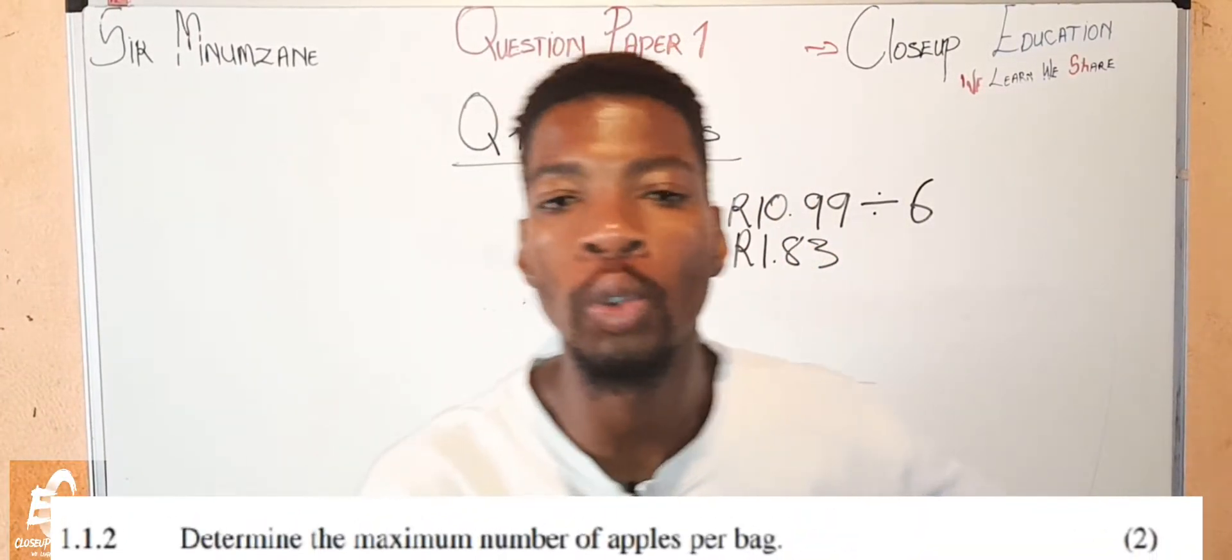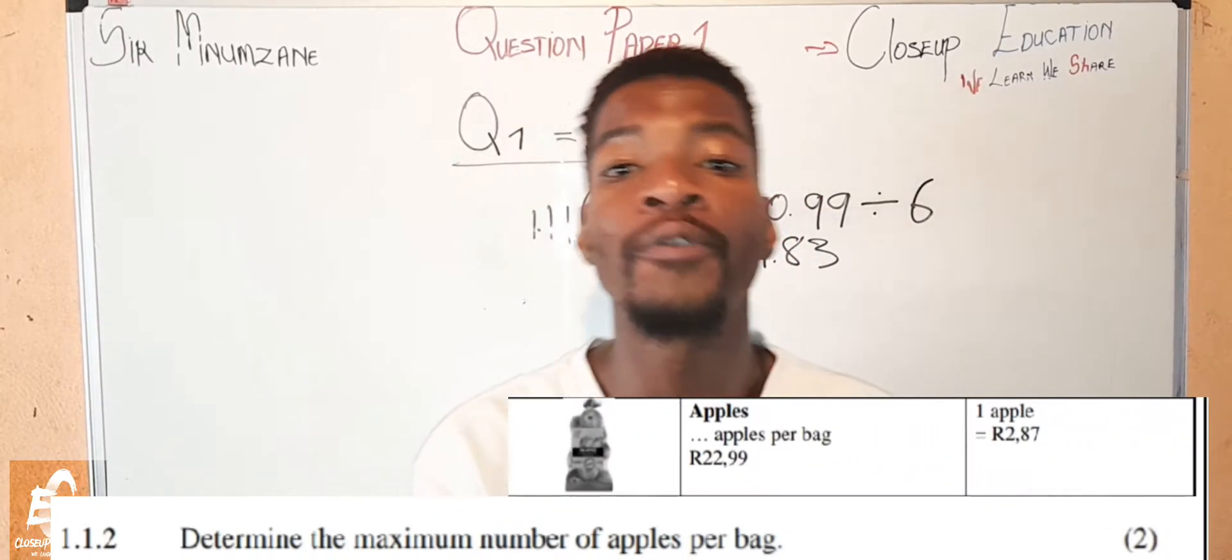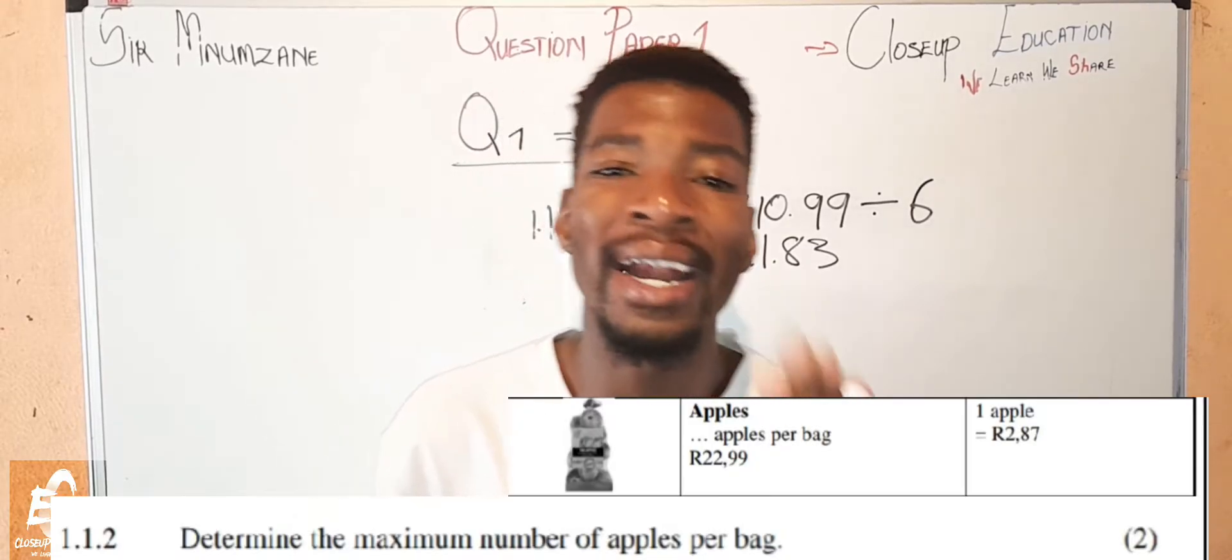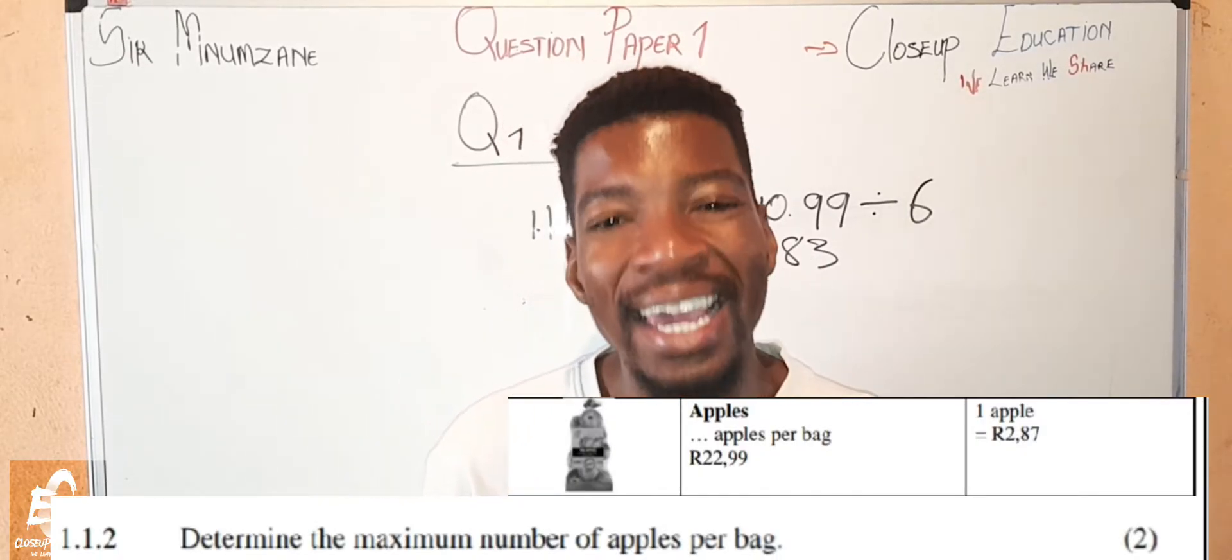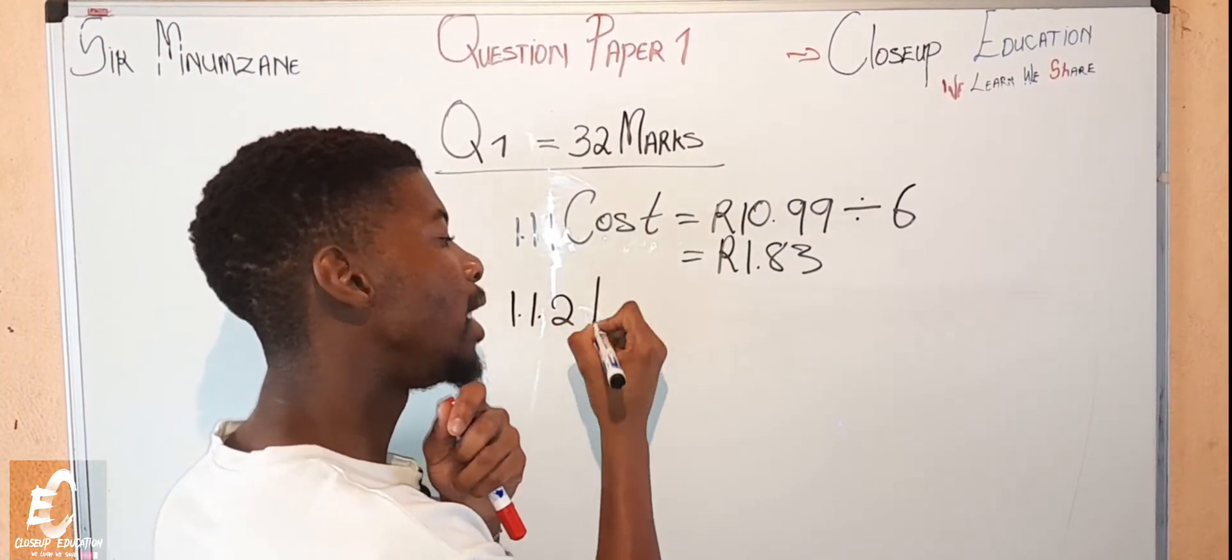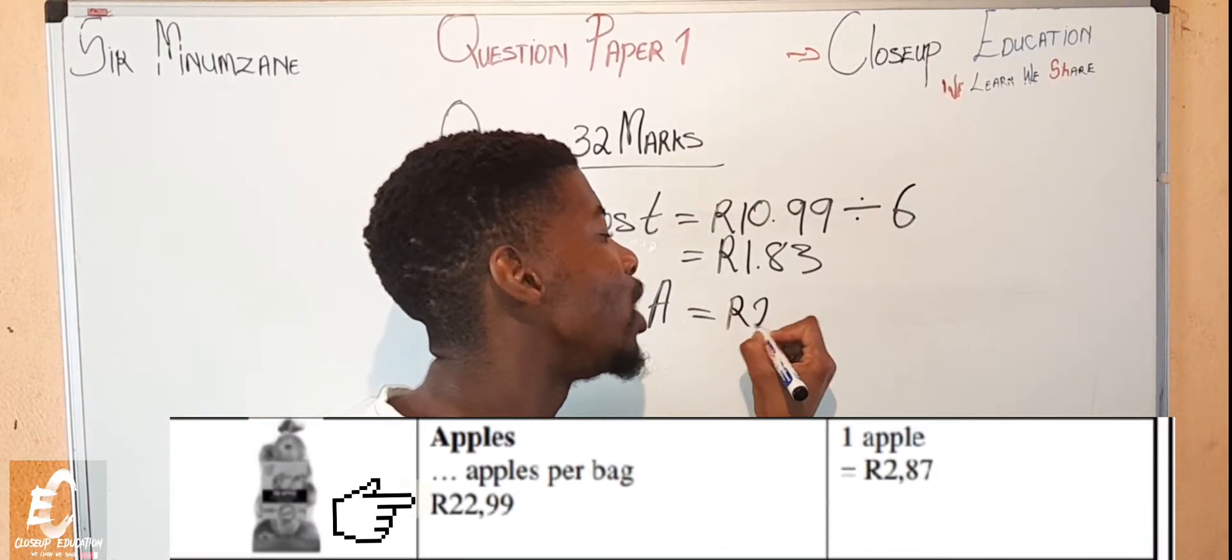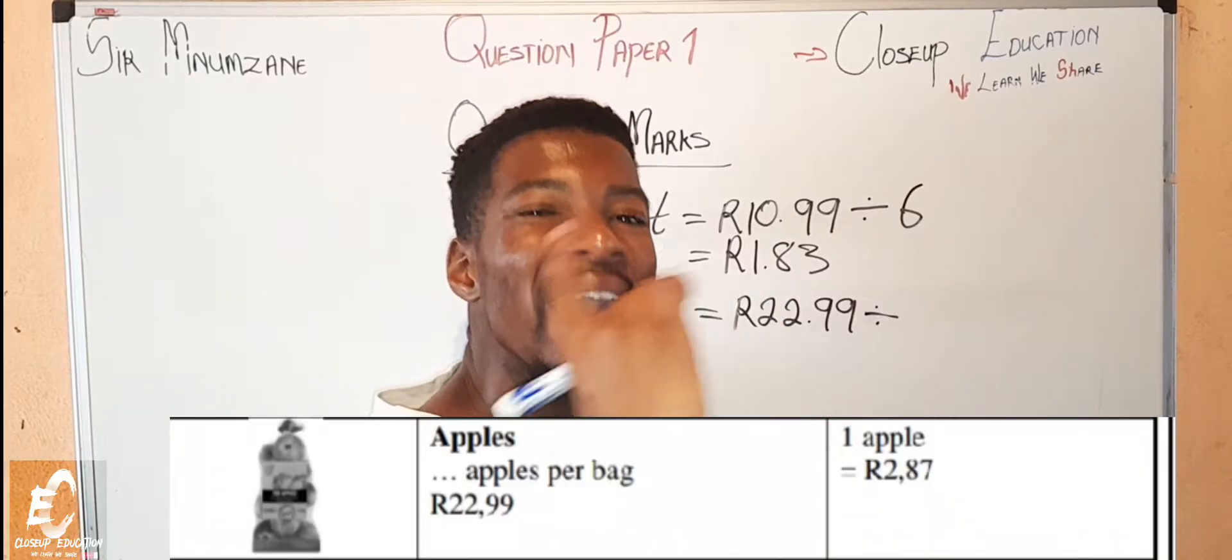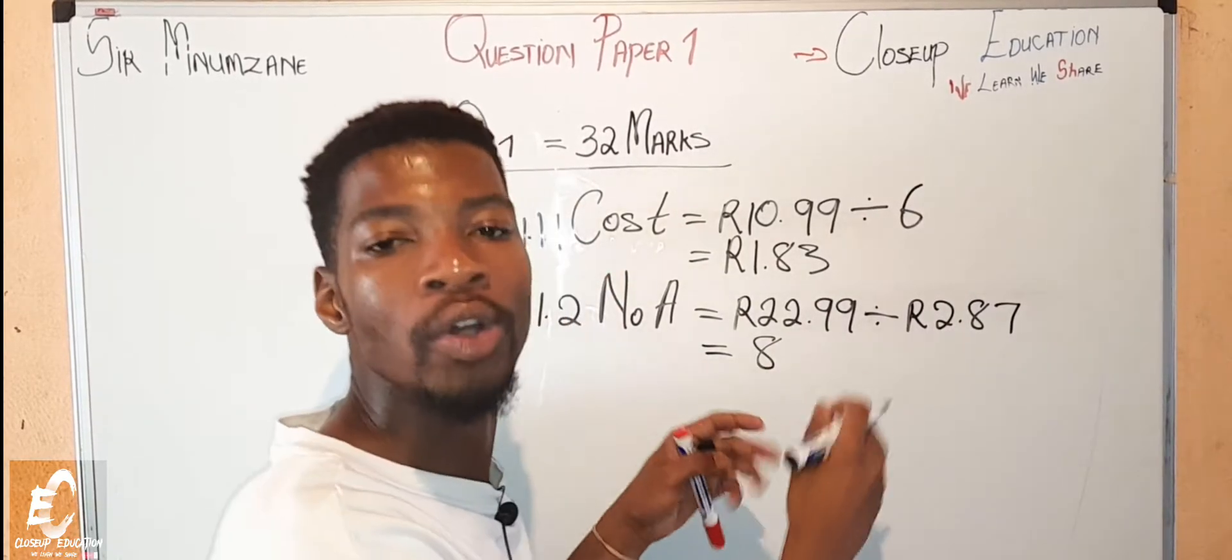Let's move to question 1.1.2. The question simply wants to understand what is the maximum number of apples found per pack. Because we've already established and understand our scenario, this question is going to be easy. We understand that a pack of apple cost 22 rand comma 99 and a single apple cost 2 rand comma 87. So 1.1.2, number of apples - we know the total cost per bag, it is 22 rand comma 99 cents, then we are going to divide this by the cost per apple which is 2 rand comma 87, and our apples are 8 apples per pack.